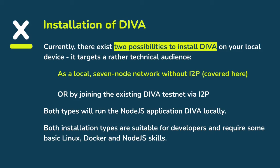Now it's time to install Diva locally. There are two possibilities: A) a local seven-node network without I2P, and B) joining the existing Diva network using I2P. We're going to use a Linux console, so you'll also need some Docker skills and some Node.js skills. At the end, a Node.js application will run locally and give you the full functionality of Diva.